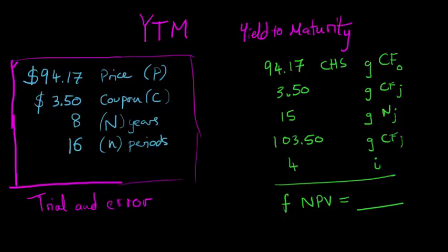And we're going to repeat this 15 times. So 15 G, N, the number of flows. And the last cash flow will be the $100 par value plus the $3.50 coupon. So $100 and $3.50, G, cash flow J, making it the 16th cash flow.